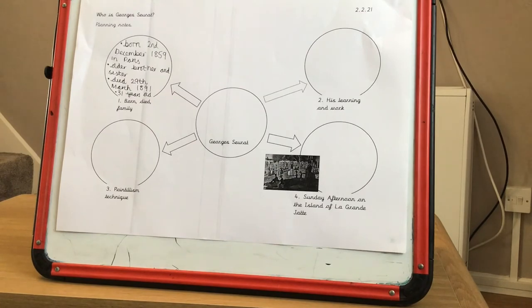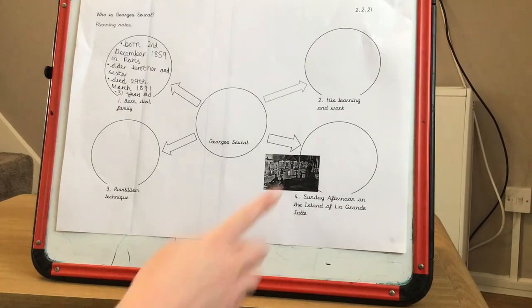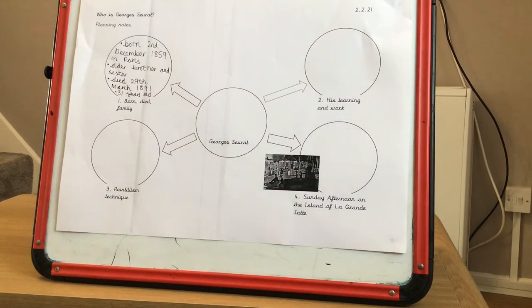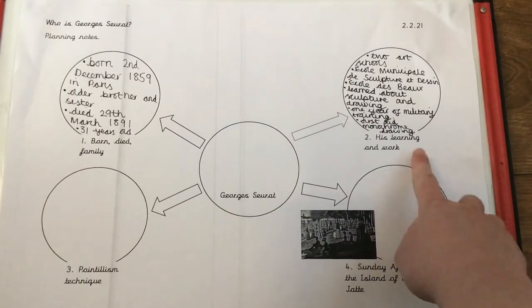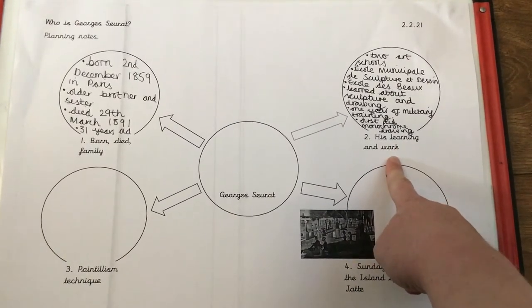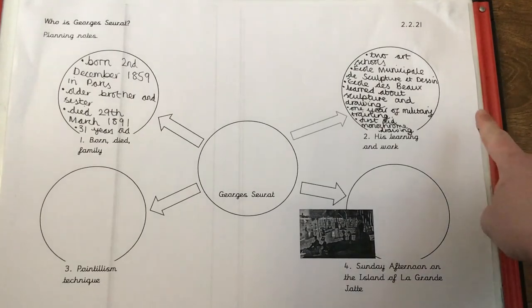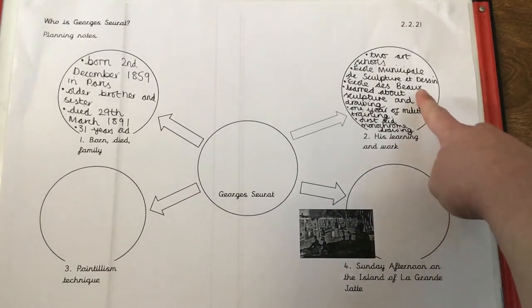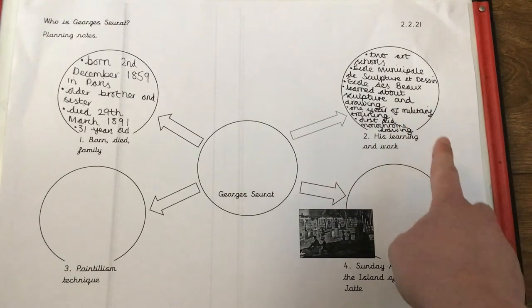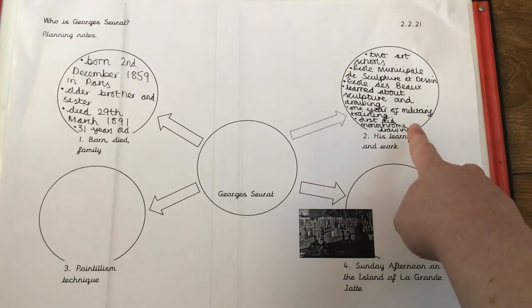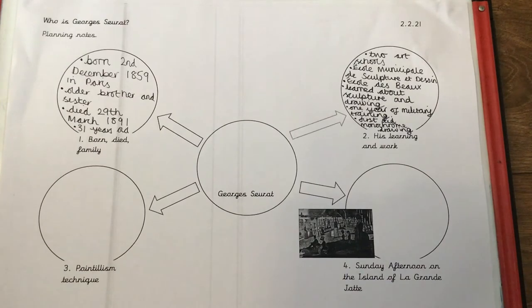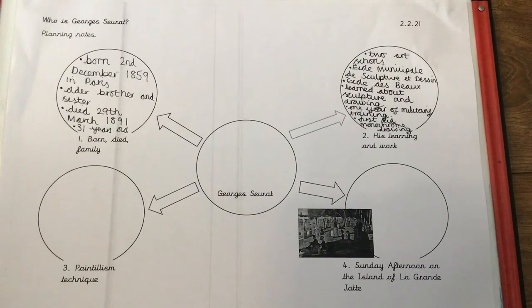You could pause the video at this point and have a read of the fact file and think about what could go in number two — his learning and work. I've just written down the key facts that I found out: he went to two different art schools; at the second art school he learned about sculpture and drawing; he did one year of military training; and first of all he did monochrome drawing before he went on to doing pointillism.